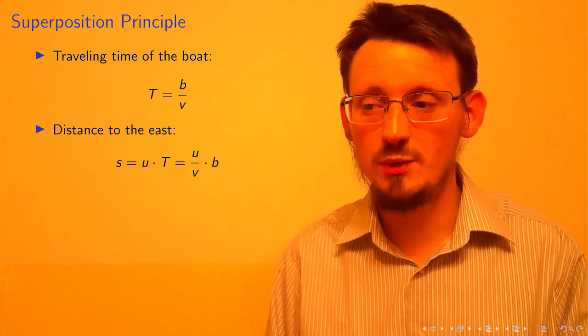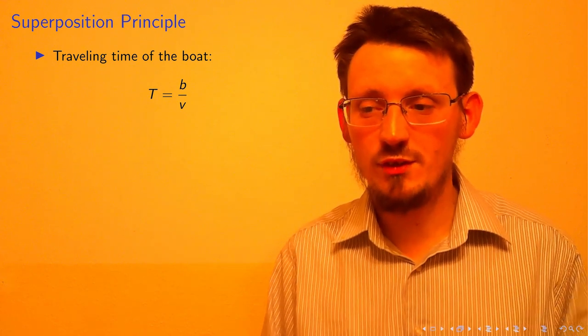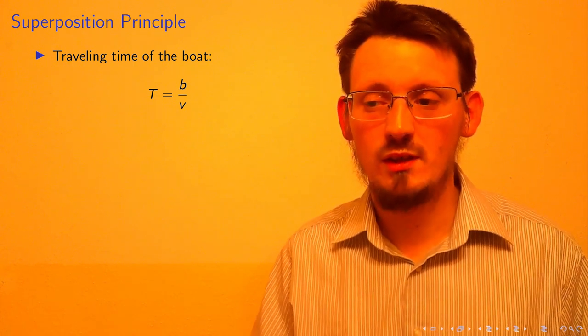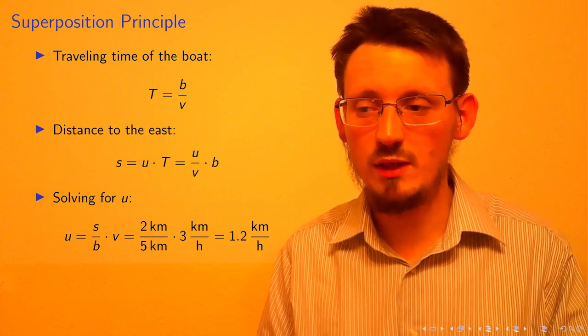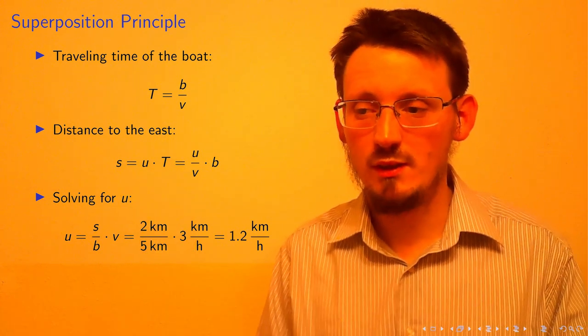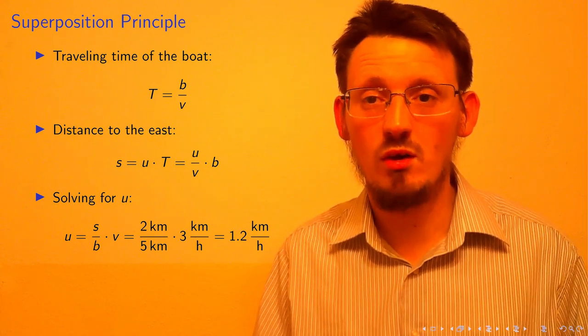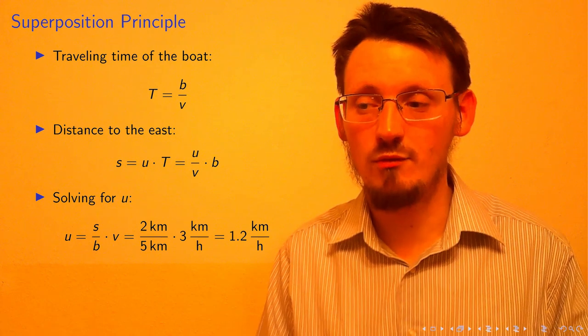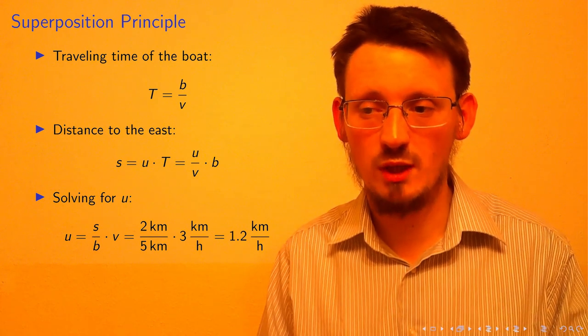We write down the formula for the distance S equal to U times T, as shown there, for the drift of the boat. We can then insert the first equation into the second one and replace the time T in that formula. The resulting equation can then be solved for the unknown variable U which leads to U equal to S over B times V. Inserting then all values into that formula results in a speed of 1.2 km per hour for the river. This is more elegant than just inserting numbers into equations because of rounding errors.